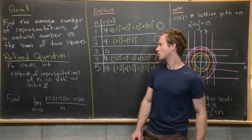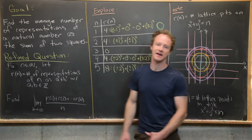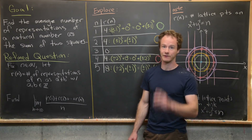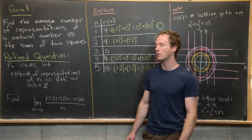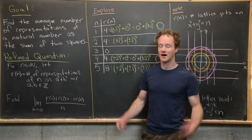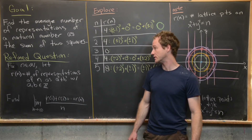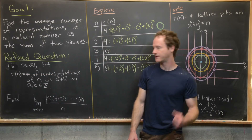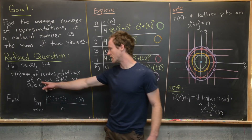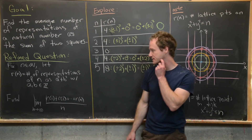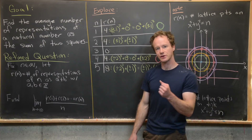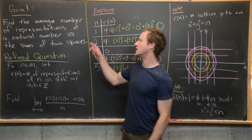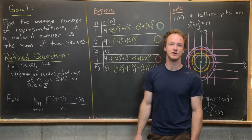For all natural numbers n — and here we're taking the natural numbers to be positive integers, not non-negative integers — we want to let r(n) be the number of representations of n as a² + b², where a and b are integers. So in other words, n = a² + b². This is counting the number of representations of n as a sum of two squares.